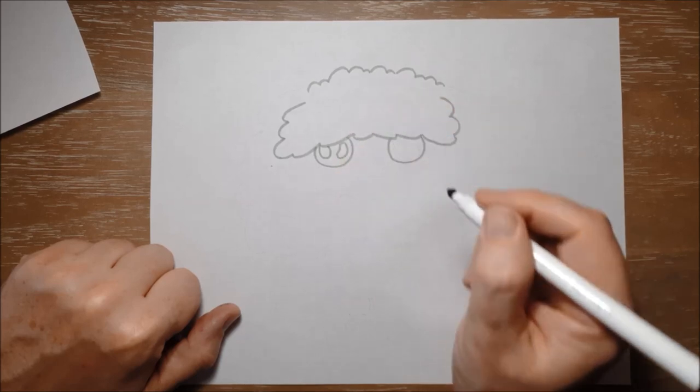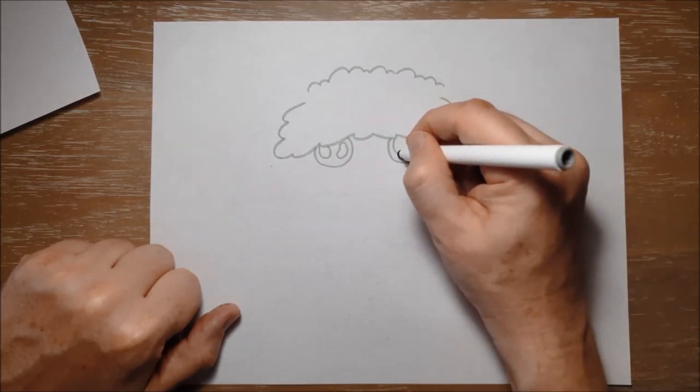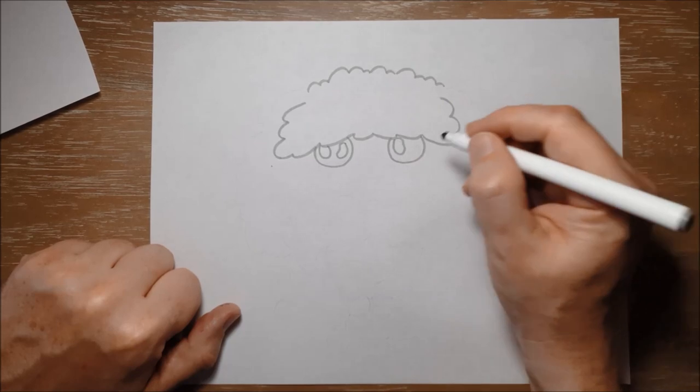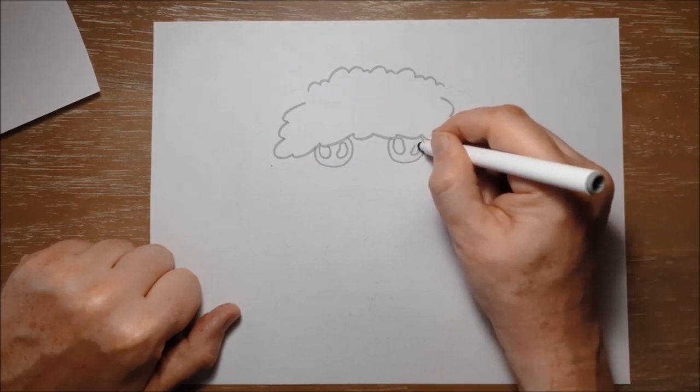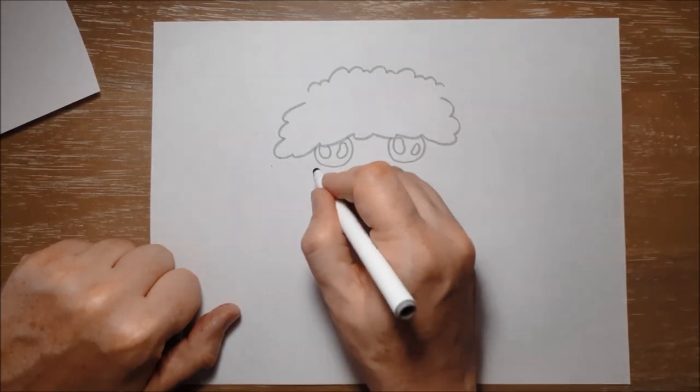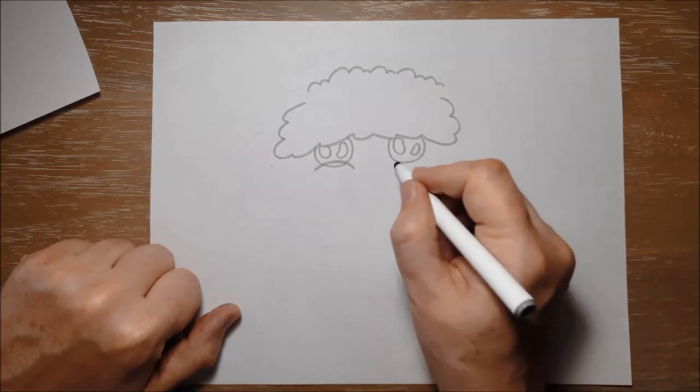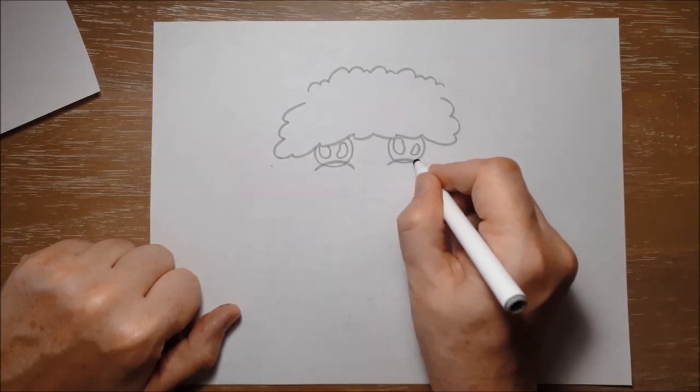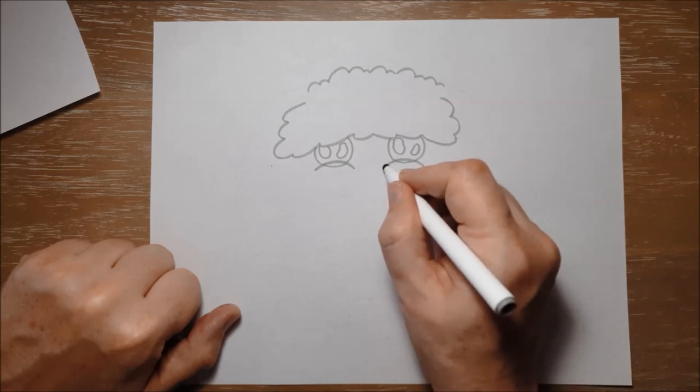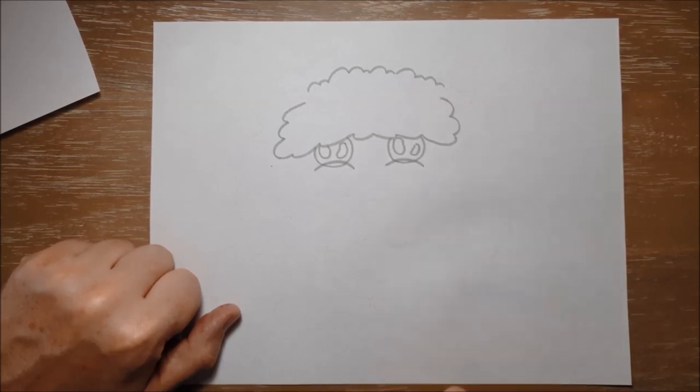A little bean shape there and a bubble on this side and a bean shape there. And then I'm going to put a little kind of a half circle there and a half circle there just where her kind of furry cheeks are coming up and covering up some of her eyes too.